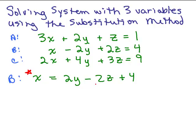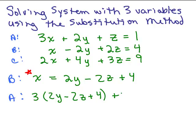The idea of the substitution method is: once you solve for one variable in one of the equations, you plug it back into the other equations, and you'll be able to eliminate X from those equations. So we'll take equation A and plug that expression in for X. So instead of writing X, I'm going to write 2Y minus 2Z plus 4. That gives us 3(2Y minus 2Z plus 4) plus 2Y plus Z equals 1.